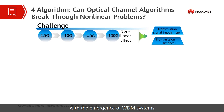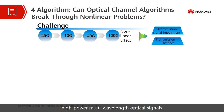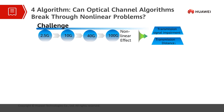With the emergence of WDM systems, wavelength division multiplexing technology enables one fiber to carry multiple channels. With the use of fiber amplifiers, high-power multi-wavelength optical signals are coupled into one fiber and converge on a very small interface, and the fiber begins to exhibit non-linear characteristics and becomes a key factor limiting the transmission performance.